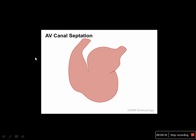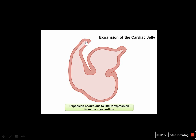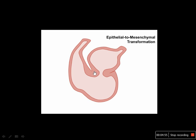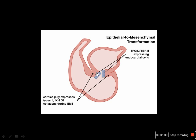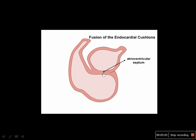Then septation of the heart begins. This is the lateral view of the heart showing the atria, the ventricles, and the outflow tract. The ventral and dorsal endocardial cushions, with the help of several cytokines and growth factors, grow towards each other and form the fused atrioventricular septum.